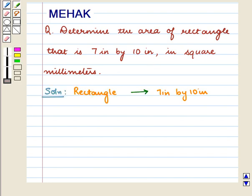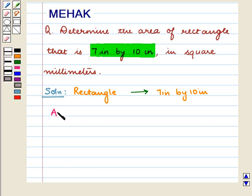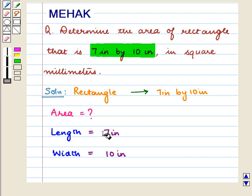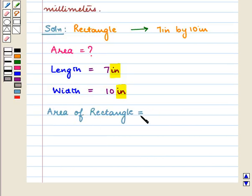We are given the measurement of the rectangle as 7 inches by 10 inches. So firstly we will find the area of the rectangle. The length is 7 inches and the width is 10 inches. Both are given in the same units, that is inches. As we know, the area of a rectangle is L into W, that is length into width.